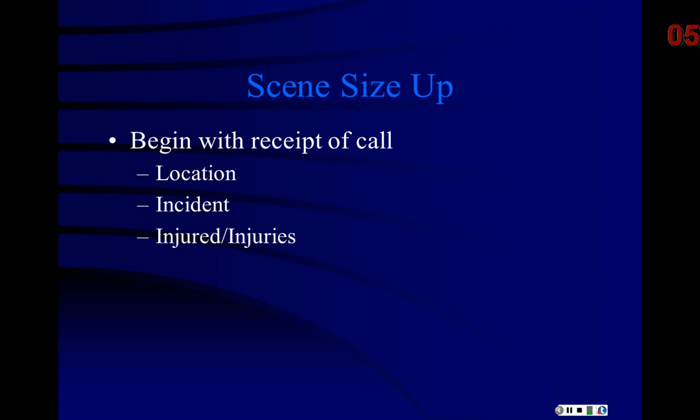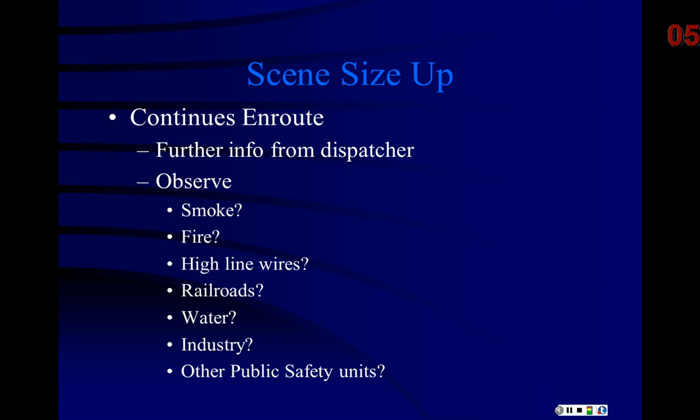If it's a location I know — say it's the Kyle Building in August, and I know there's a 350-pound patient on the 7th floor and the elevator is broken — do I want to make sure I've got other assistants coming? Absolutely. It continues en route: as I get further information from the dispatcher or from other units arriving on scene, my dispatcher is not my only source. If somebody's on scene, I need to find out what they've got.